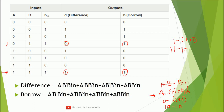Now let us write down the difference and borrow equations. We identify where difference equals one — there are four such entries. Using the SOP method the equation is: A̅·B̅·B_in + A̅·B·B̅_in + A·B̅·B̅_in + A·B·B_in.